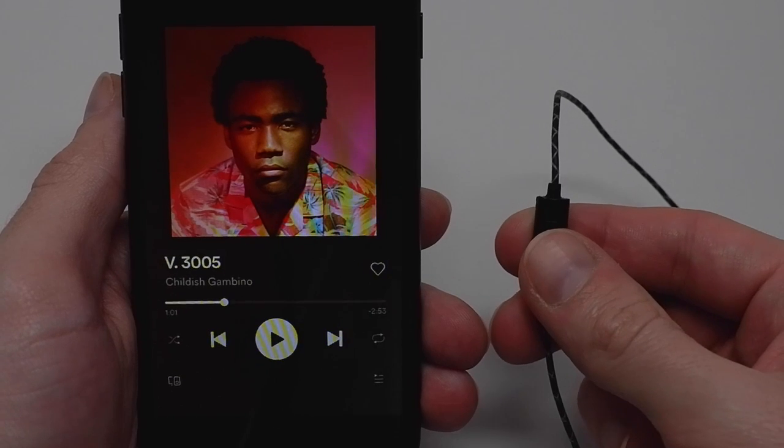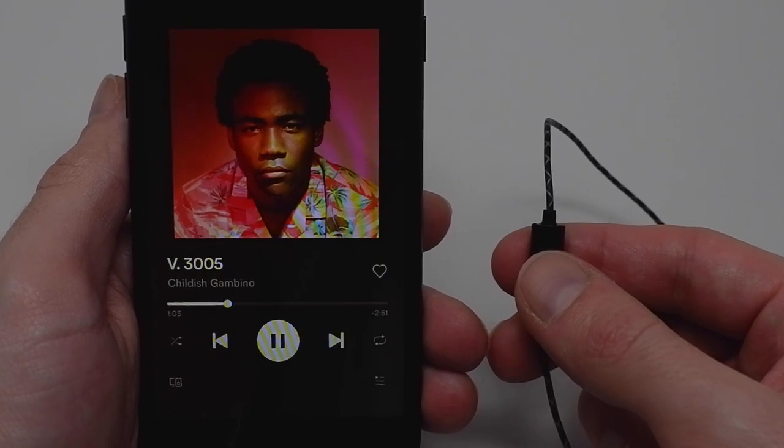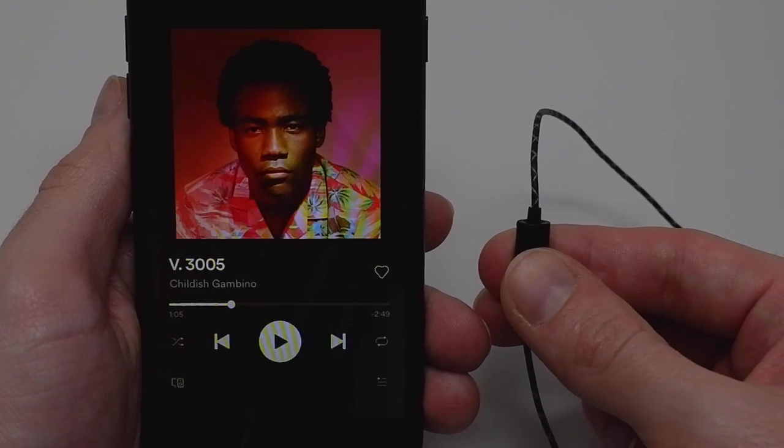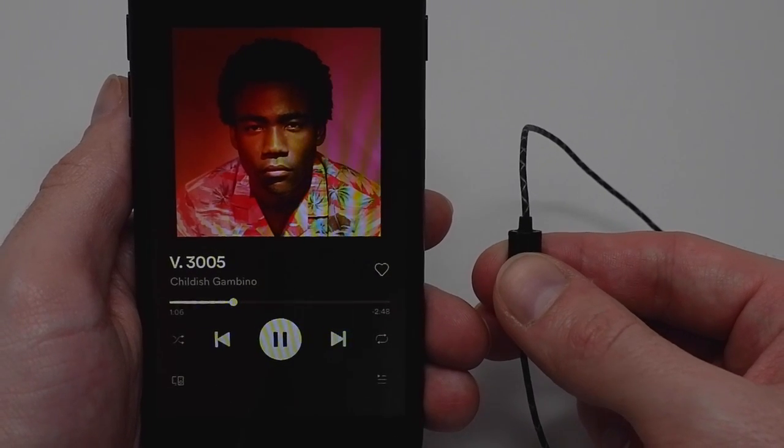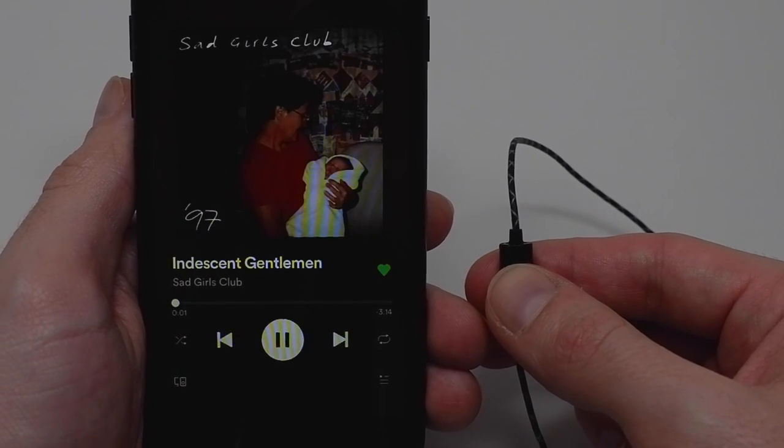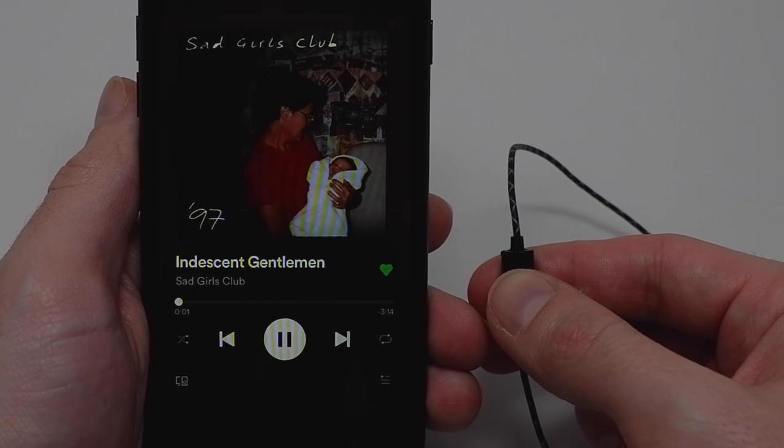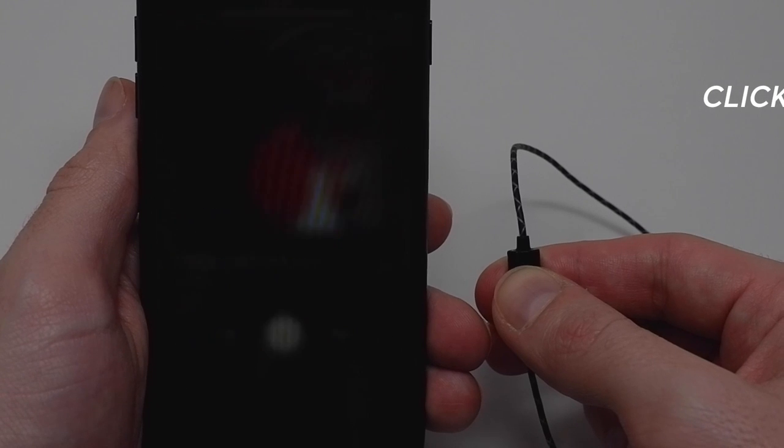The control button on the cable has phone and microphone capabilities. Simply press the middle button once to play or pause music or to answer and hang up phone calls. Press it twice to skip the track, press it three times to start the song again, and hold the button to activate voice control.